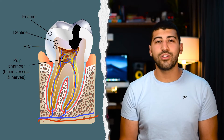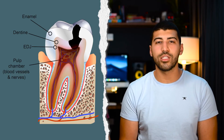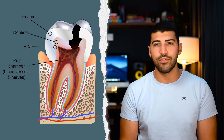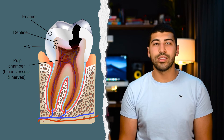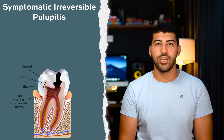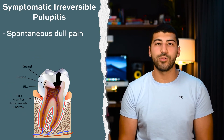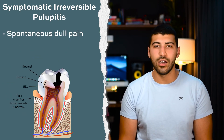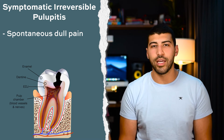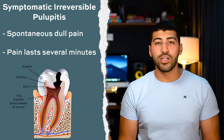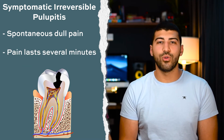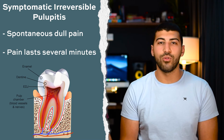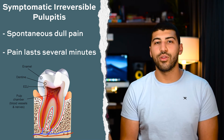If the caries isn't treated, it will approach the pulp and cause it to become chronically inflamed. At this stage it's called symptomatic irreversible pulpitis, with symptoms of a spontaneous, dull and prolonged pain that lasts several minutes. It's irreversible because if we just remove the caries and do a filling, the pulp will remain inflamed and cause pain, and so there's a need for root canal treatment.